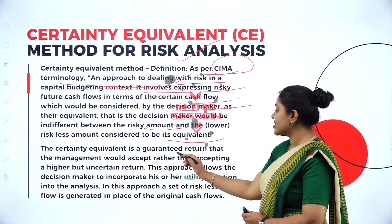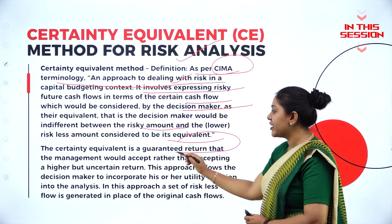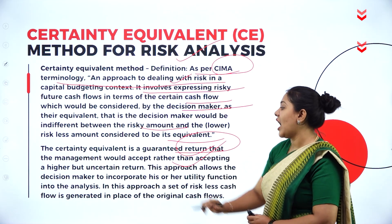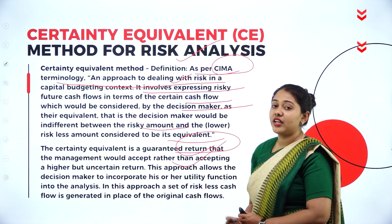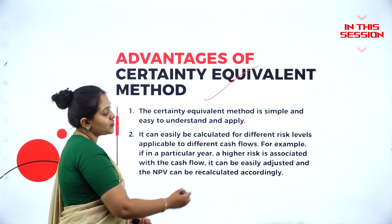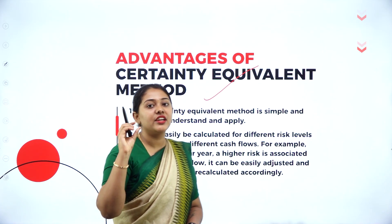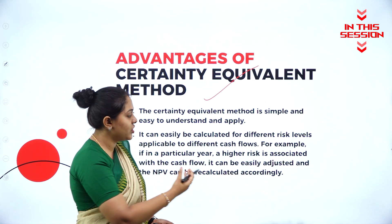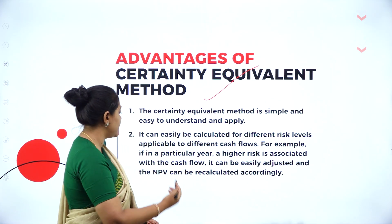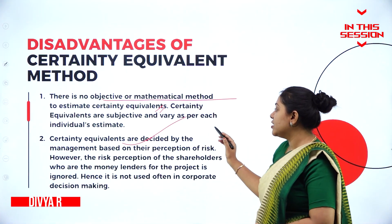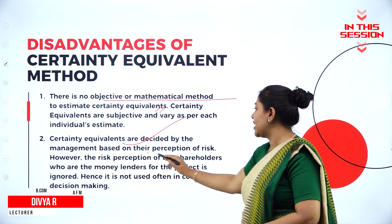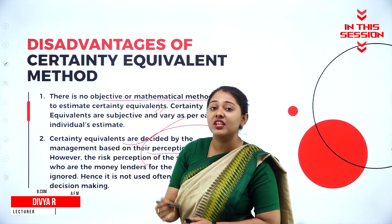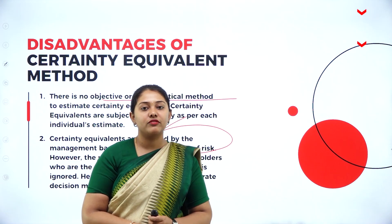The certainty equivalent approach is a guaranteed return that the management would accept rather than accepting a higher but uncertain return. It is applicable to different cash flows. Based on the certainty equivalent coefficient assumption, it is very easy to work with. Certainty equivalents are decided by the management based on their perception of risk, and they take up the certainty coefficients accordingly.